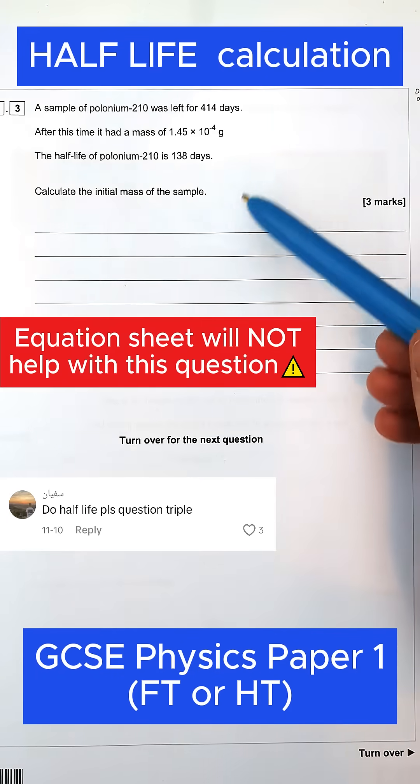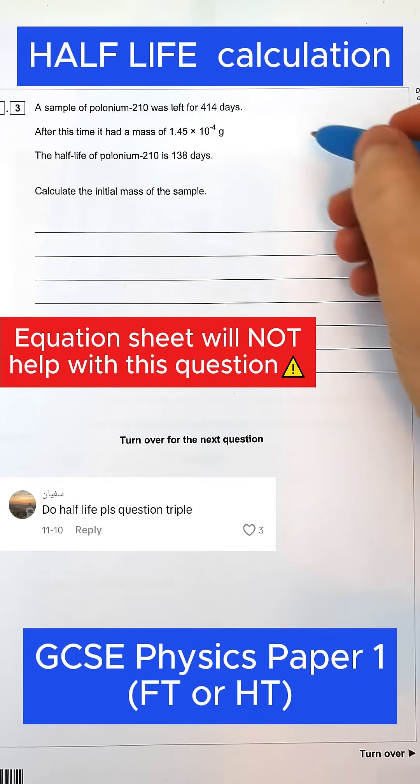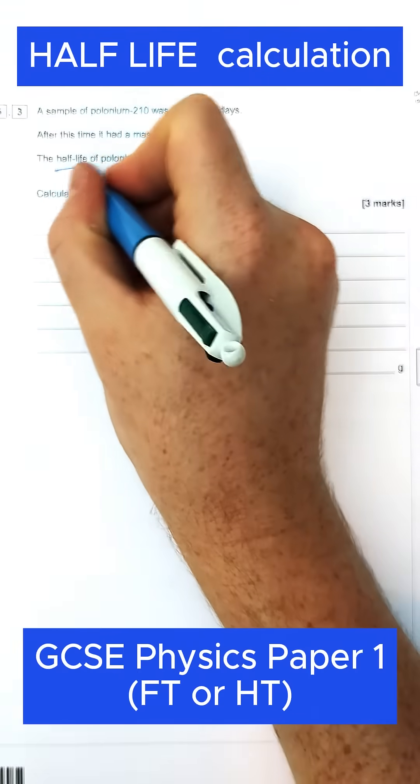GCSE physics students, your equation sheet will not help you with this calculation. It is a half-life calculation, so it involves radioactive decay.